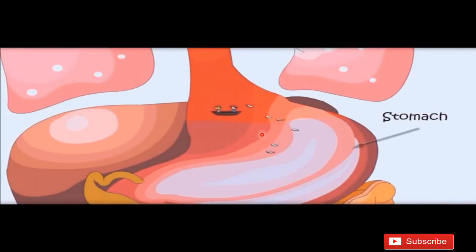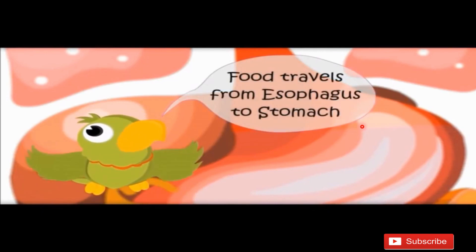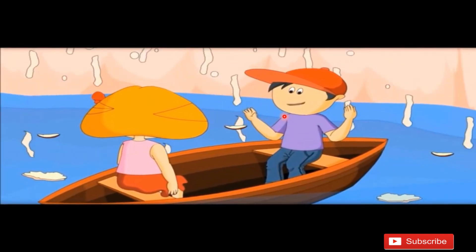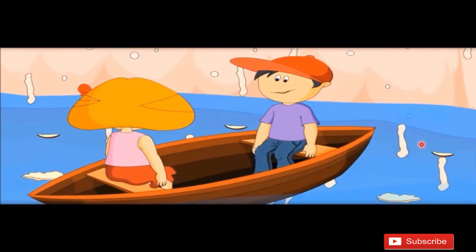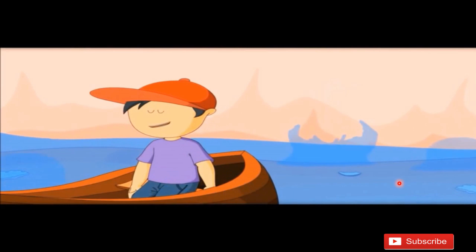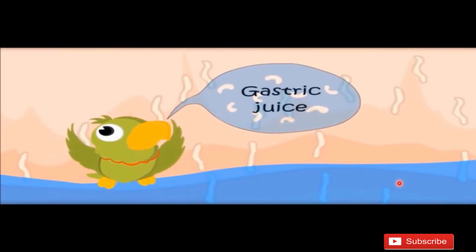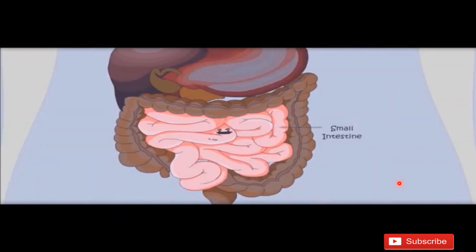The food from the esophagus enters into the stomach. In the stomach, the wall secretes gastric juice. Food travels from the esophagus to the stomach, where the gastric juice contains an acid called HCl. From the stomach, food then travels into the small intestine.